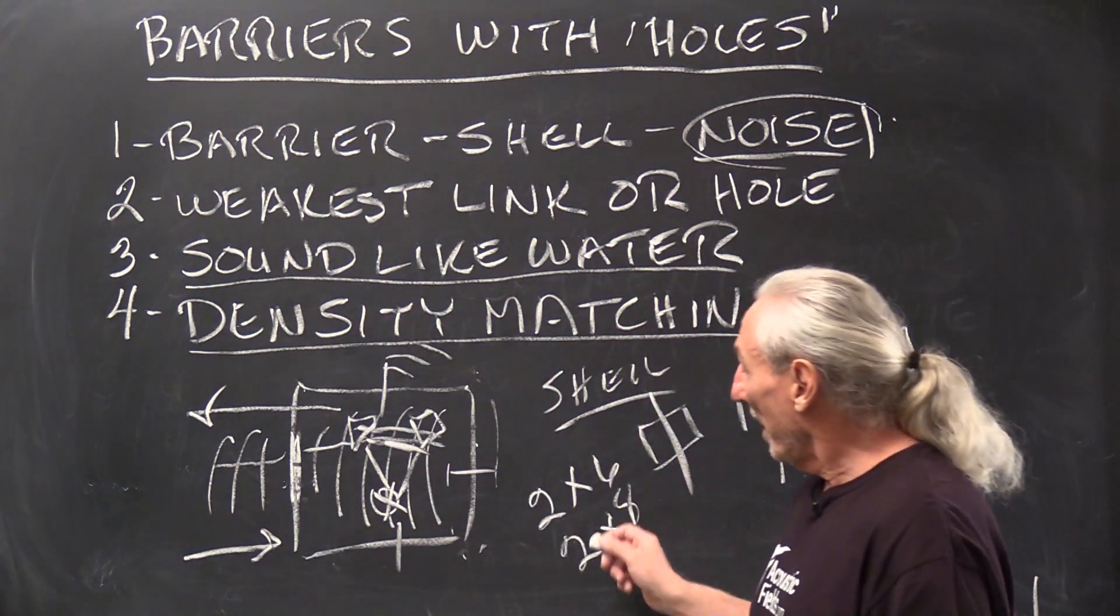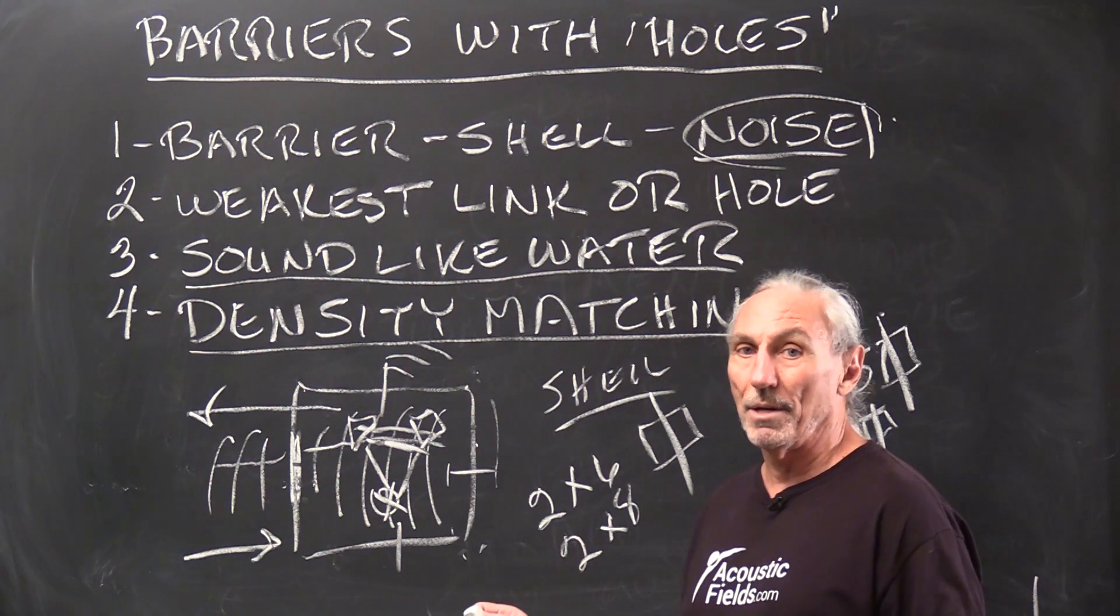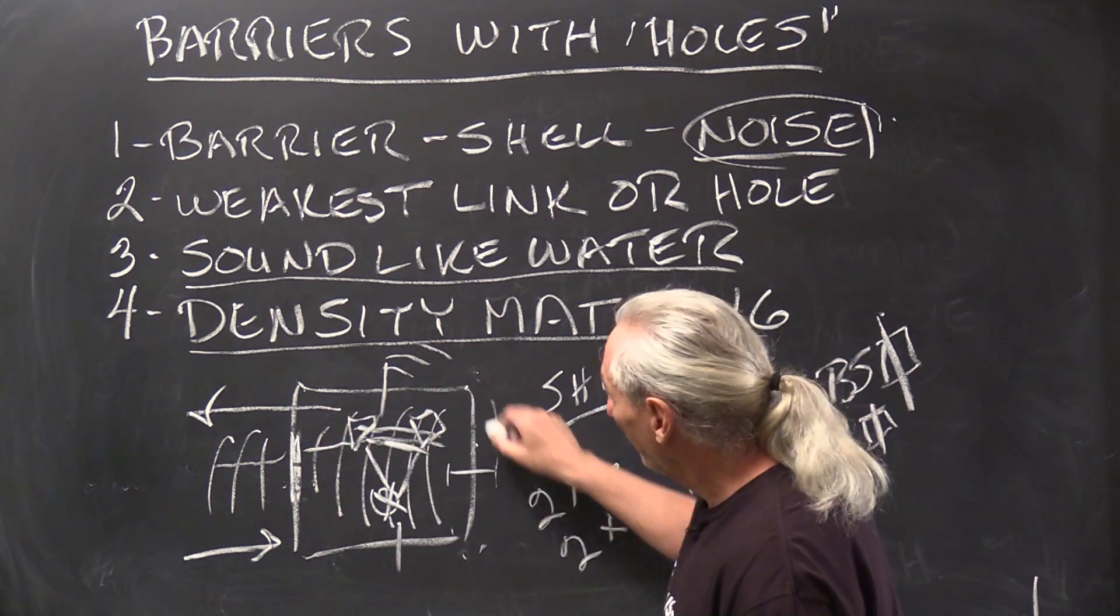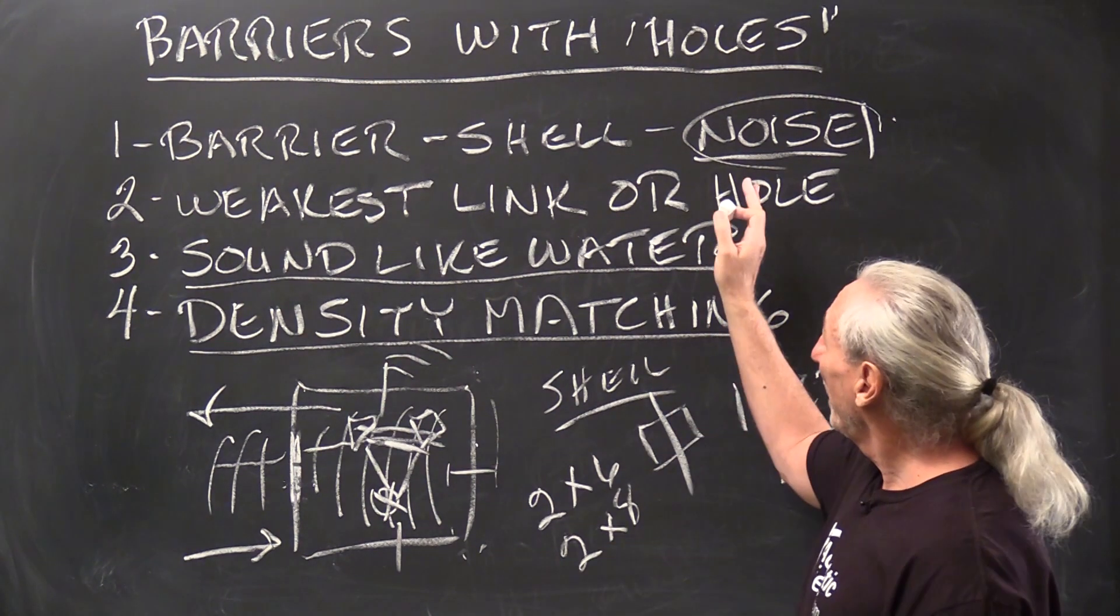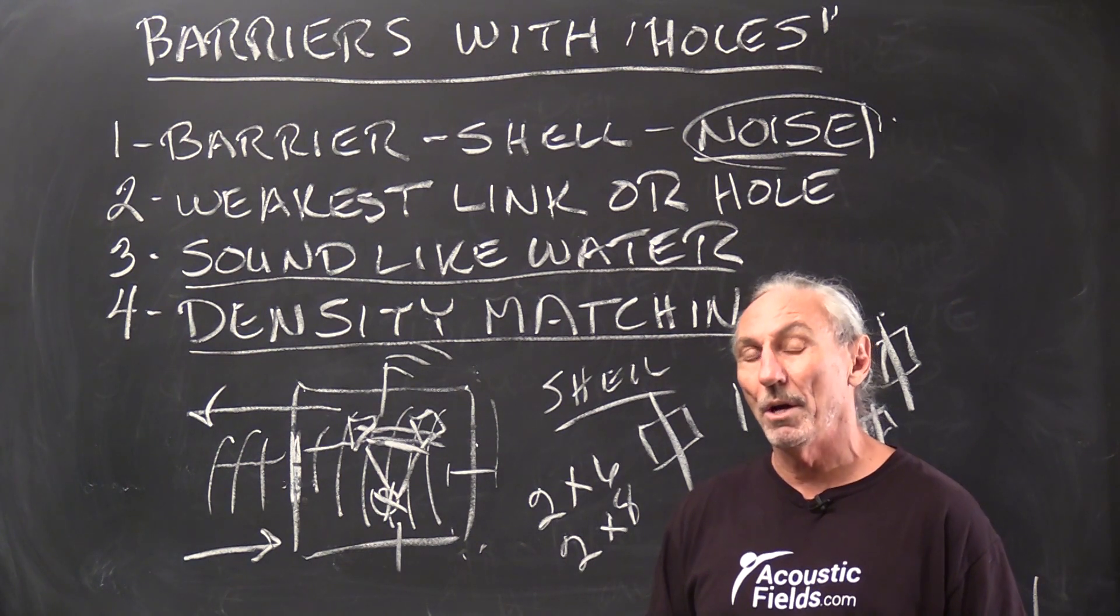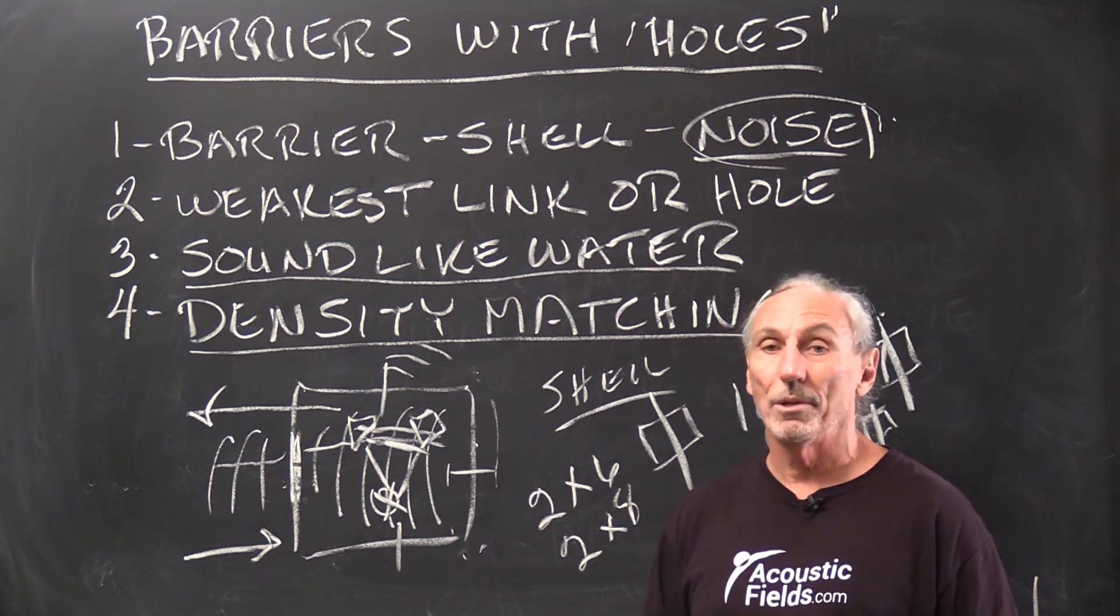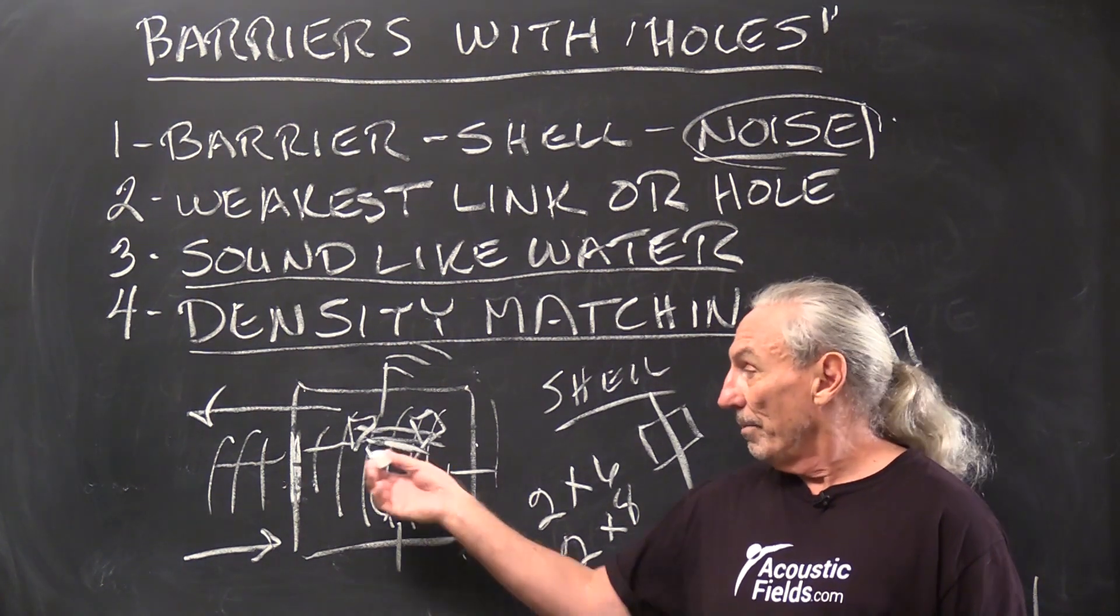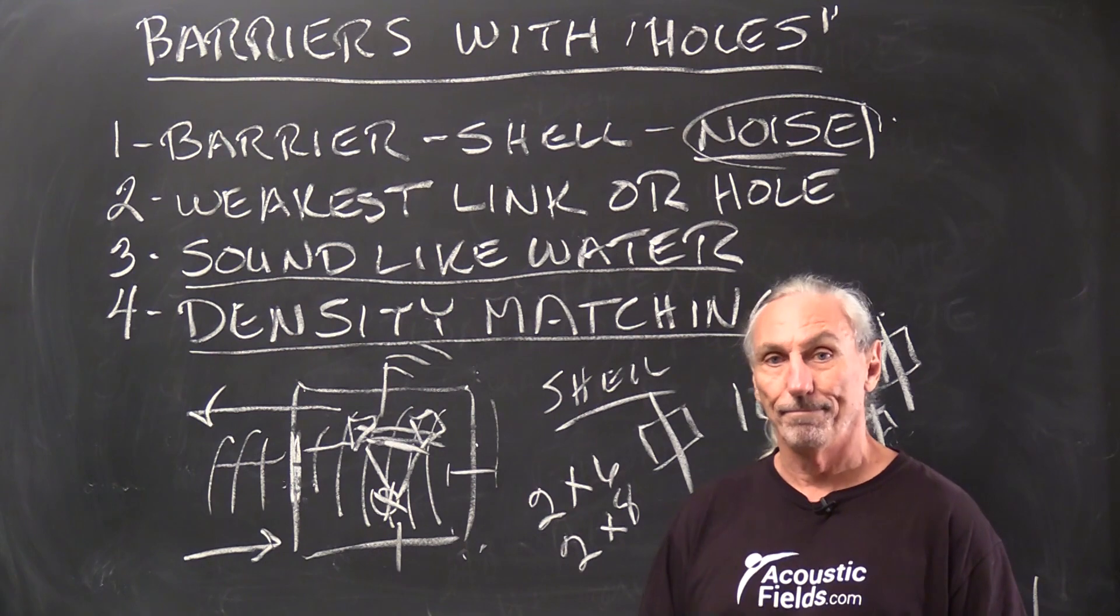So a lot of variables here we have to consider. So if we're going to be real serious about audio, we got to get all of these surfaces to have the same density when it comes to noise. So I hope that helps, barriers with holes, got to be careful, got to think about how important the audio is in the room and if it's really important and critical listening is the objective, we got to match all the densities and plug up all the holes. Thank you.